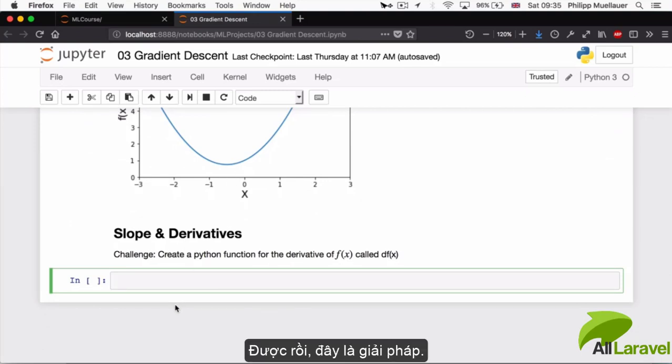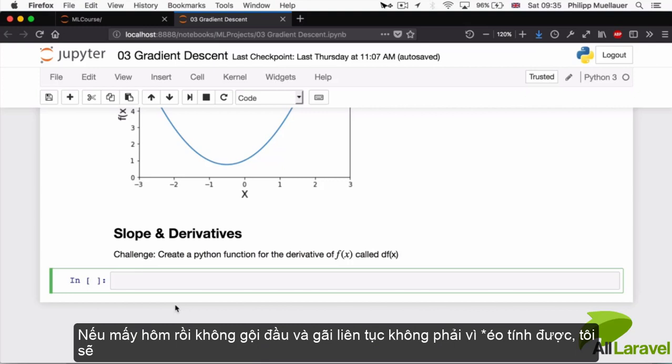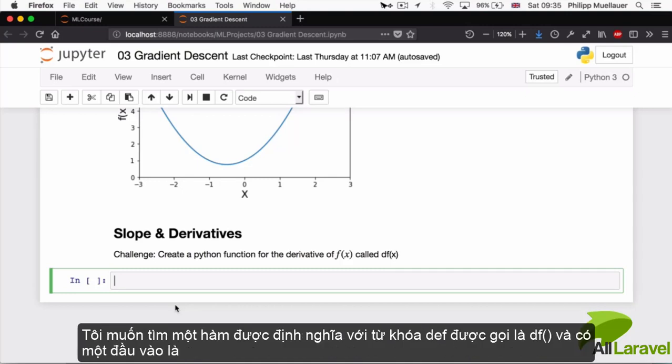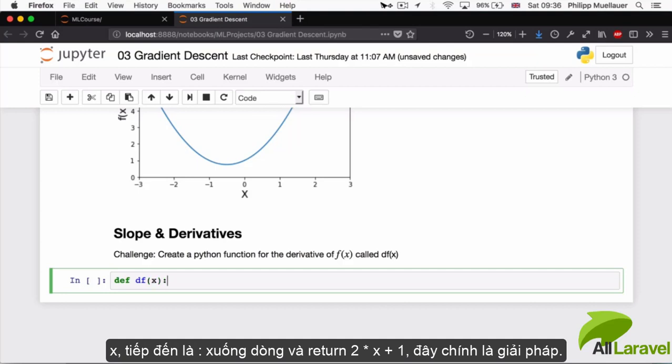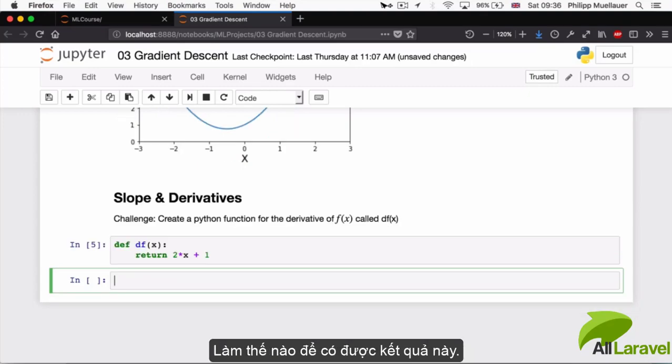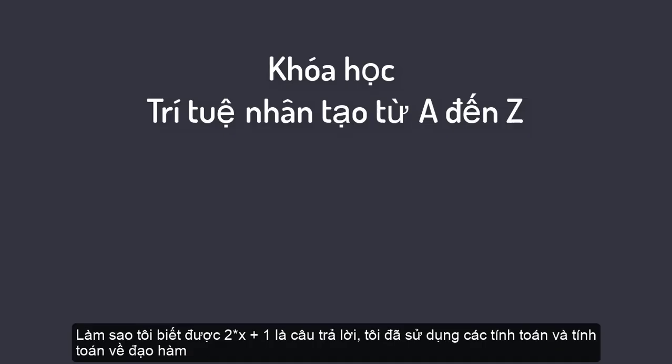All right, so here's the solution. If you were scratching your head at this point because your calculus is a little bit rusty, let me show you what the solution is and also how we arrived at it. So I'm going to define a function with the def keyword. Then I'm going to call it df and have one input, namely x, colon, new line, return two times x plus one. And that's it. So how did I arrive at this? How did I know it was going to be two x plus one? So the answer is I used calculus.